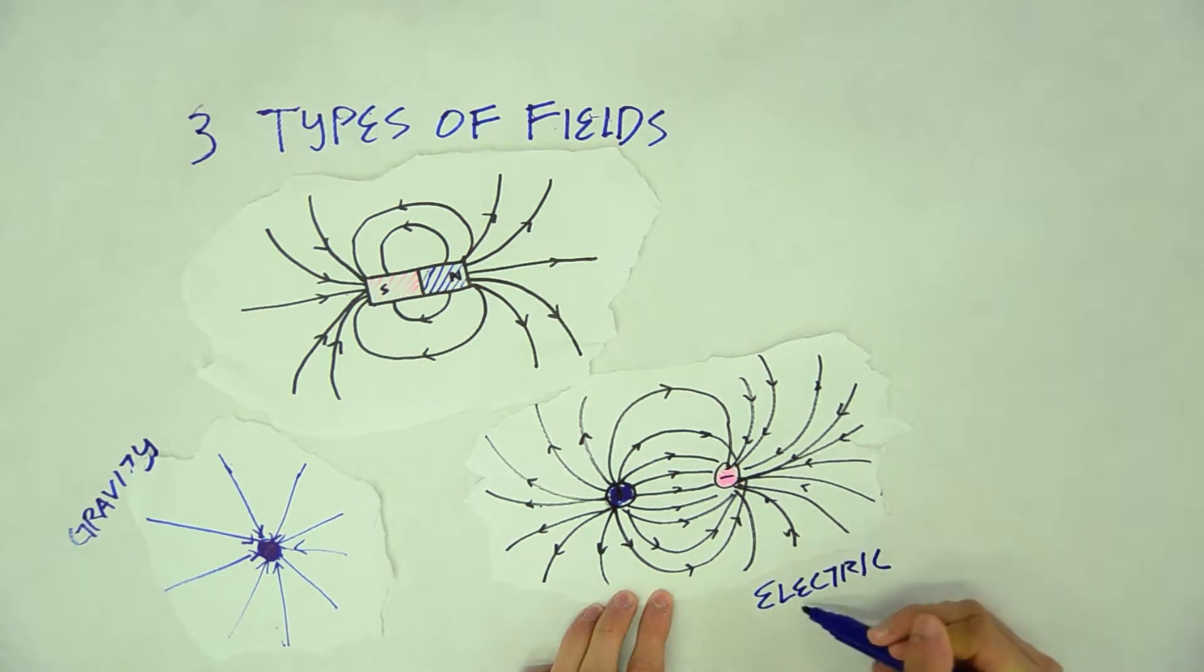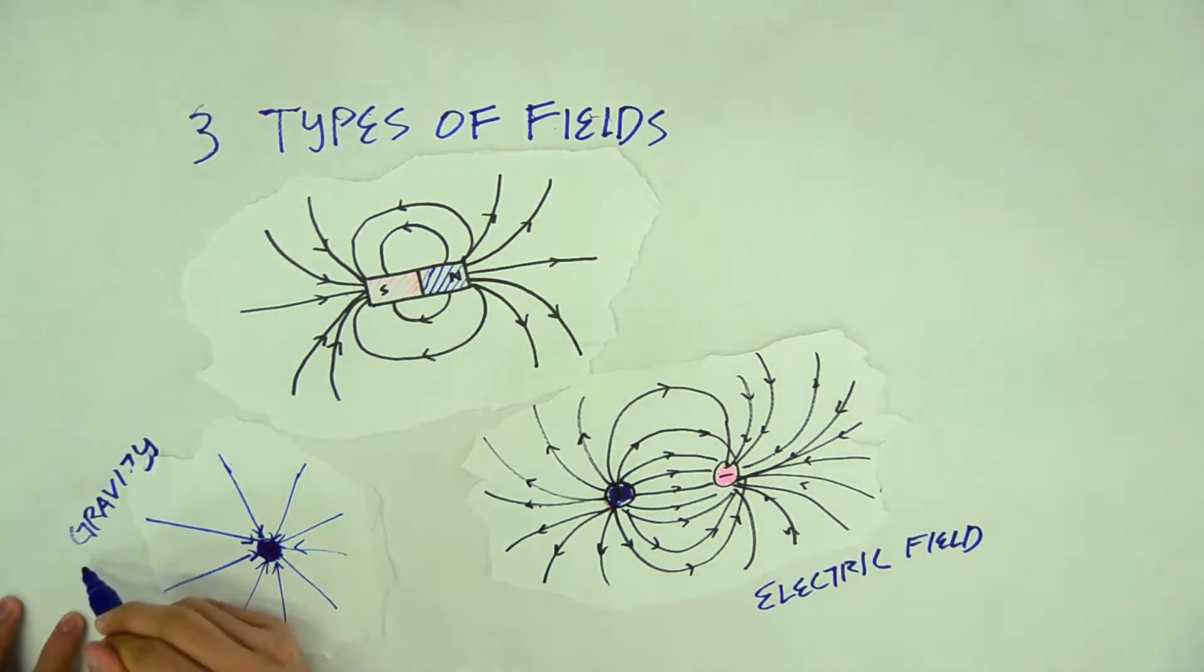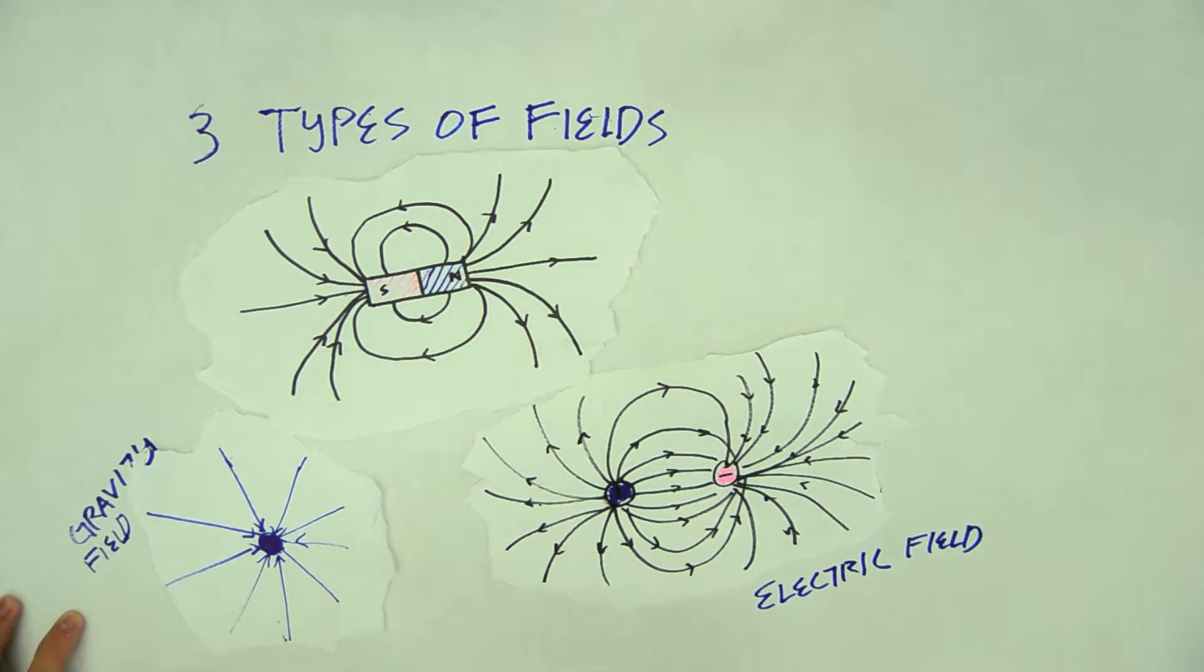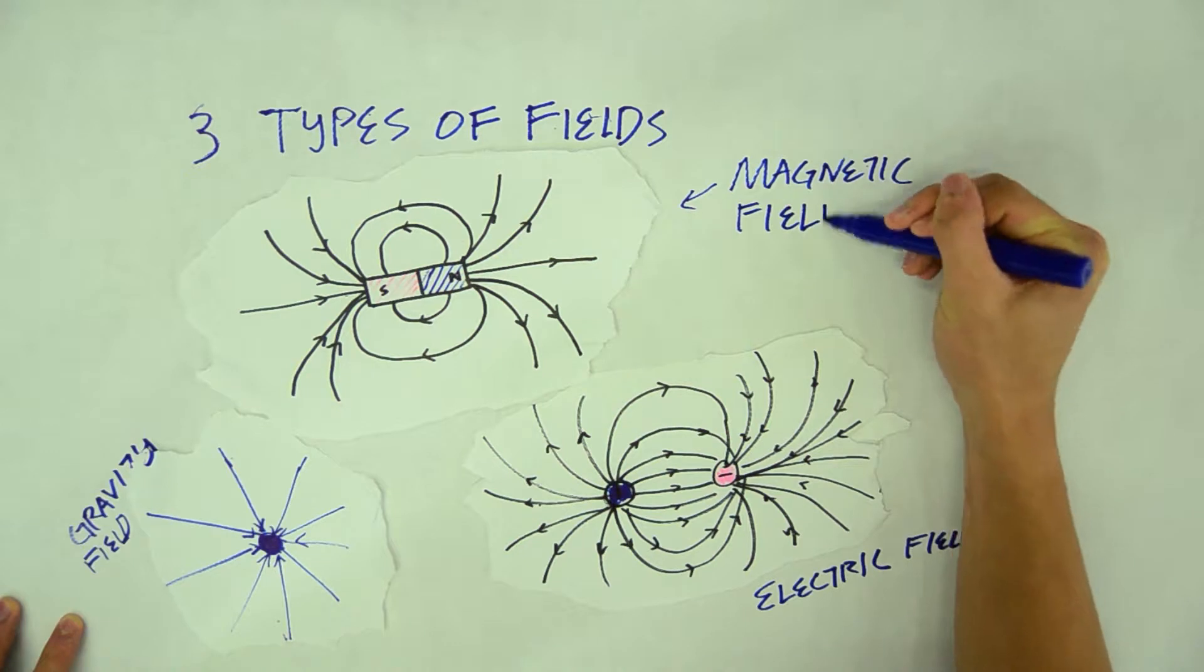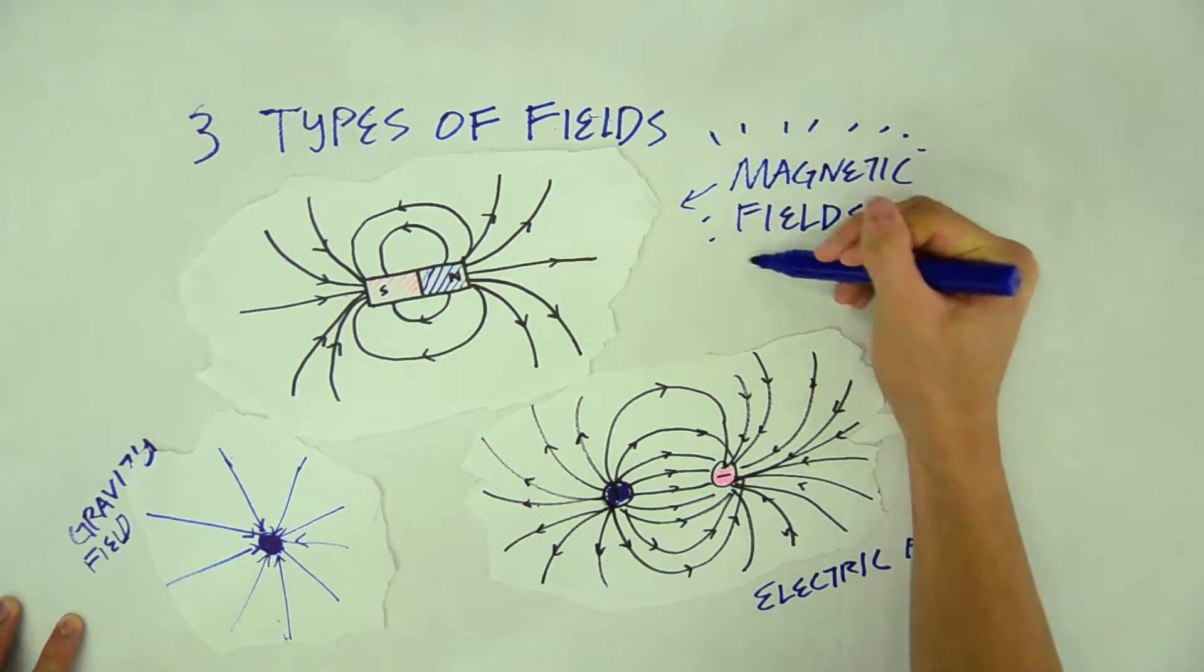The first field is for gravity. Next, we have an electric field. And the third one is a magnetic field which will be the focus of our video today.